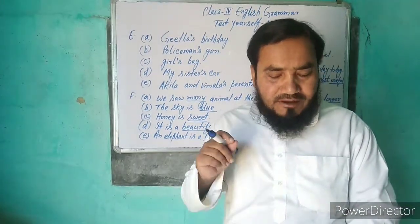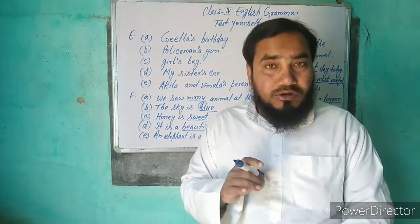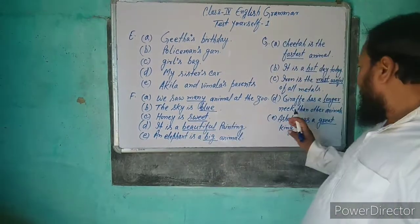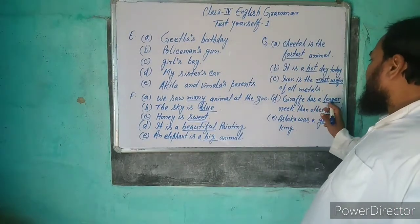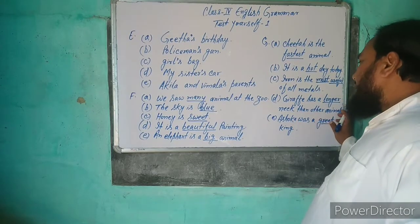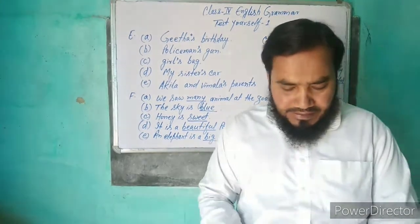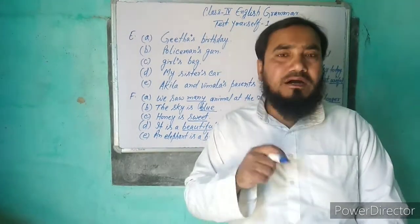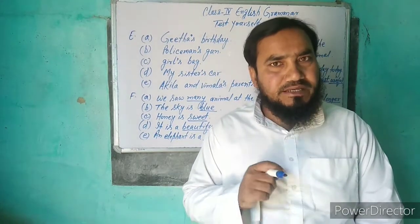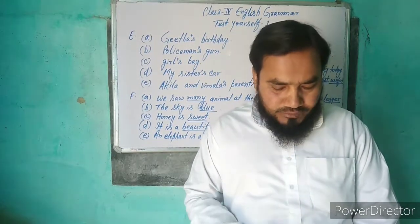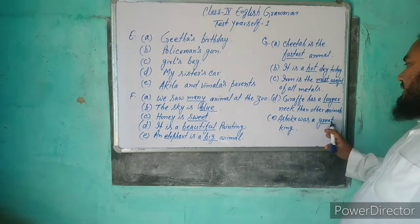D ہے: Giraffe has a ___ neck than other animals. Option میں longer ہے، تو longer آئے گا۔ Giraffe has a longer neck than other animals۔ E ہے: Ashoka was a ___ king. Box میں great ہے، تو great آئے گا۔ Ashoka was a great king۔